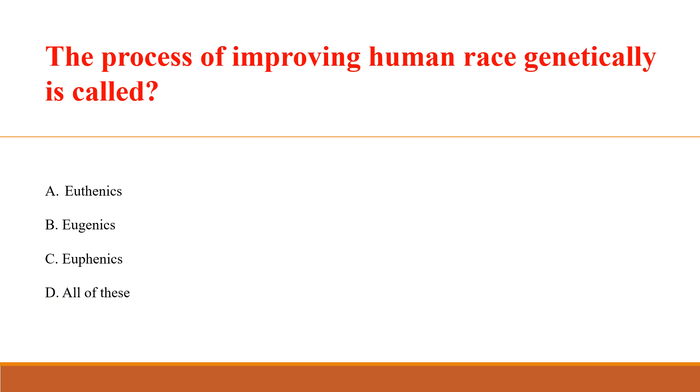The process of improving the human race genetically is called: Answer B: Eugenics.